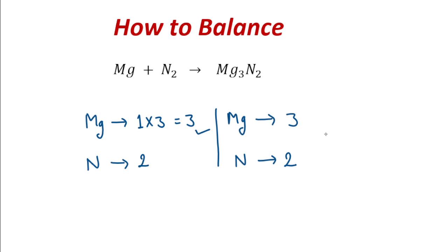Now, 3 magnesium is here and 3 magnesium in product side. So, multiply it by 3 only. At this point, this equation is balanced. 3 magnesium, 3 magnesium, 2 nitrogen is here and 2 nitrogen is here.